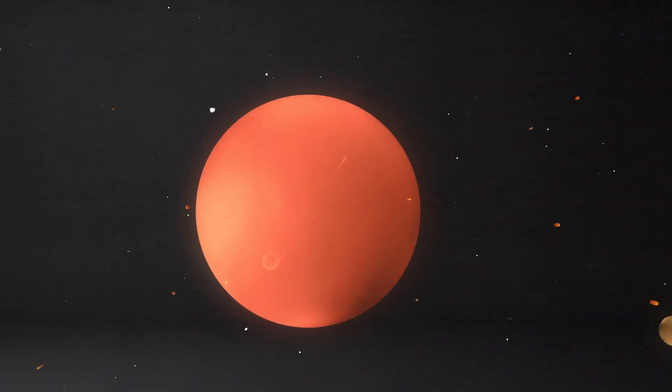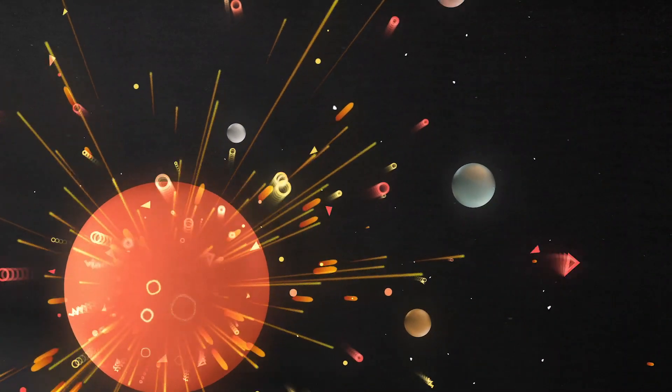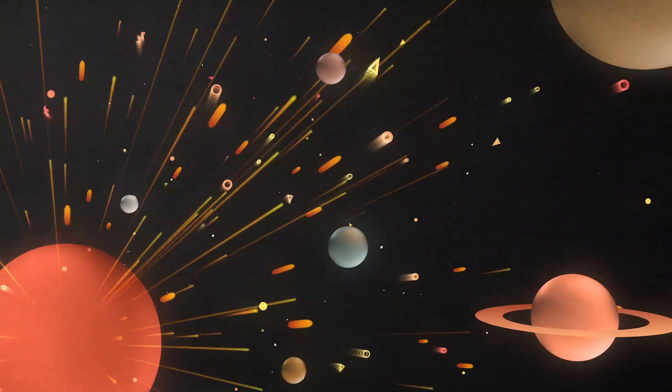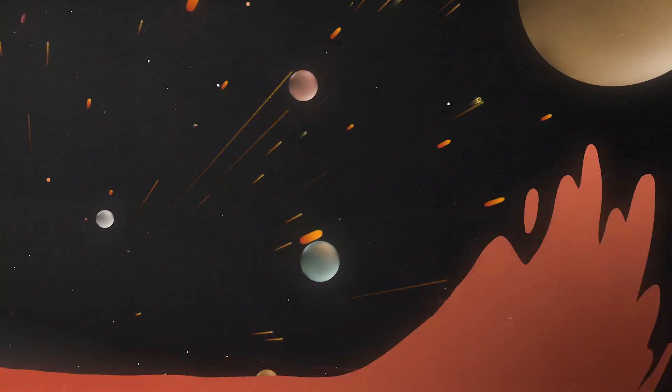This ebb and flow of solar activity affects the entire solar system, including spacecraft electronics and astronauts that can be affected by particle radiation if they're not sufficiently protected.